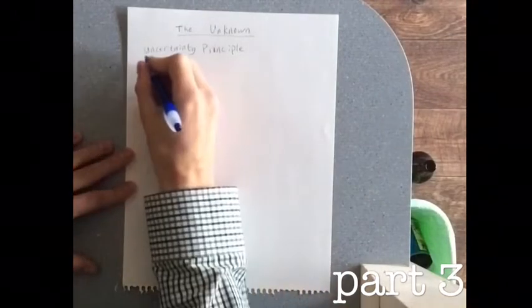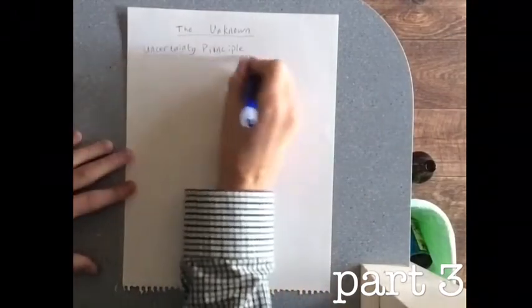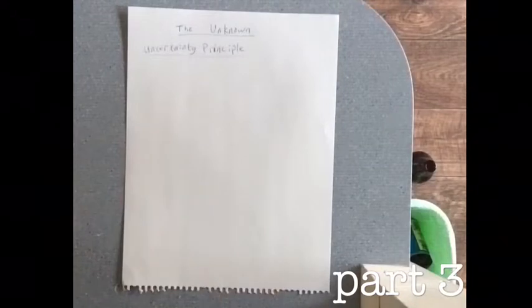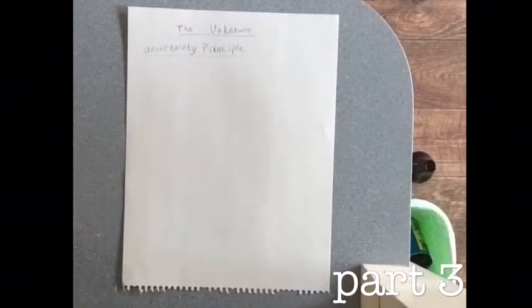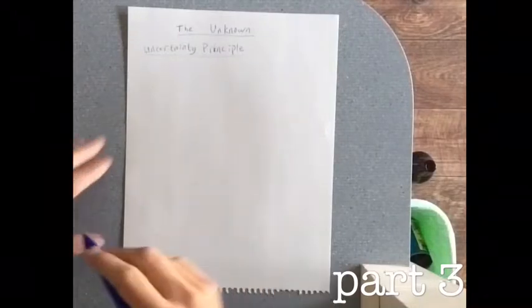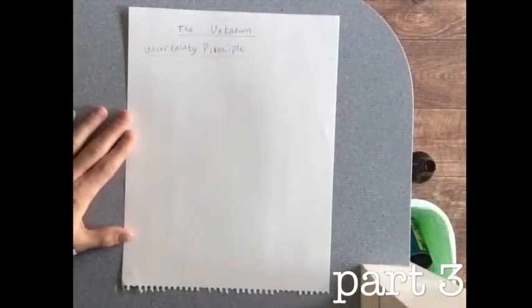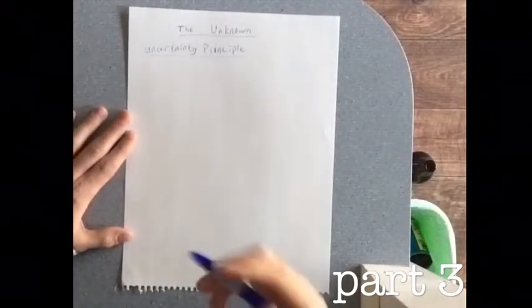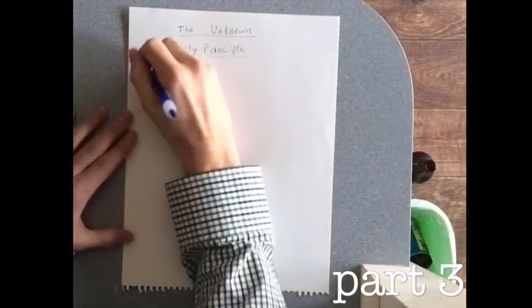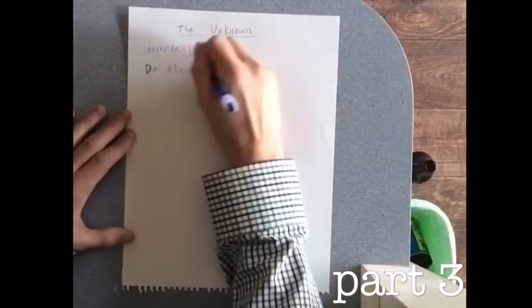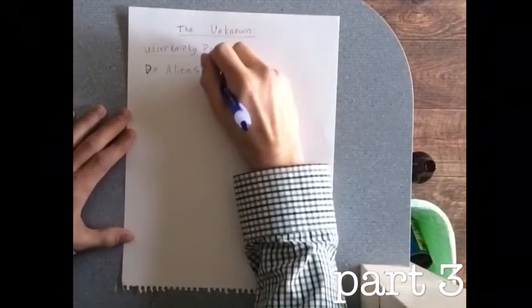The Uncertainty Principle basically says: if you ask yourself a question and you don't know the answer, basically all the possibilities exist. So if we ask a simple yes-or-no question — I'll just ask it here: Do aliens exist?